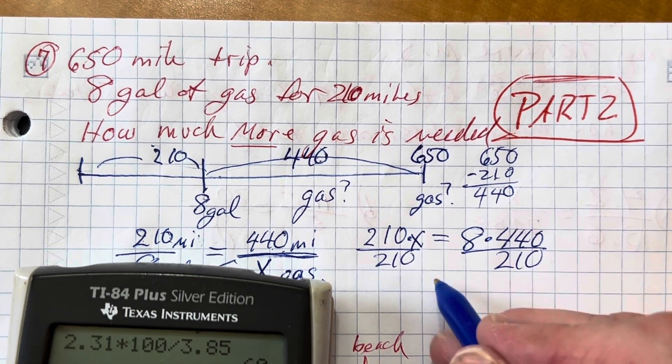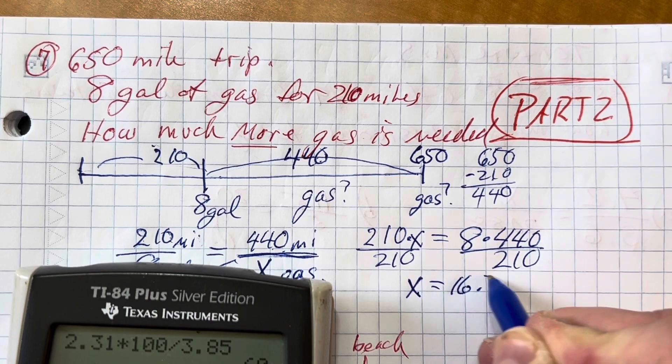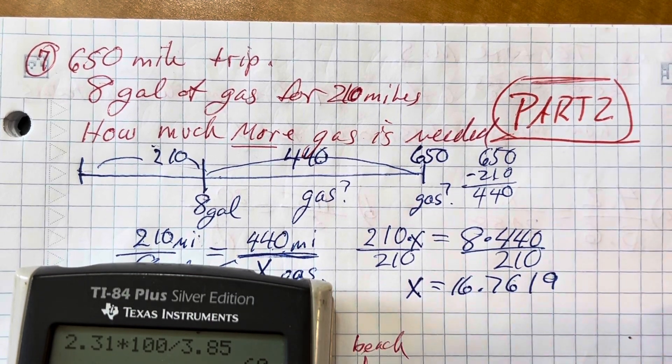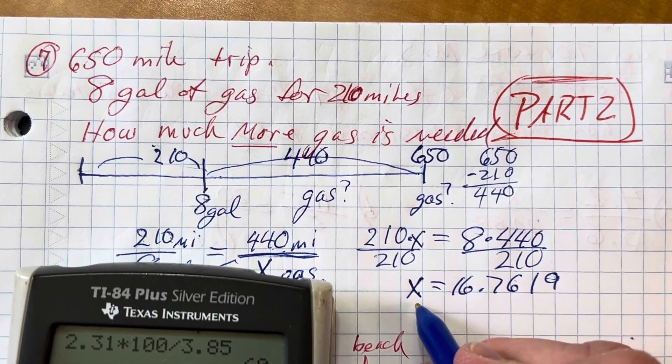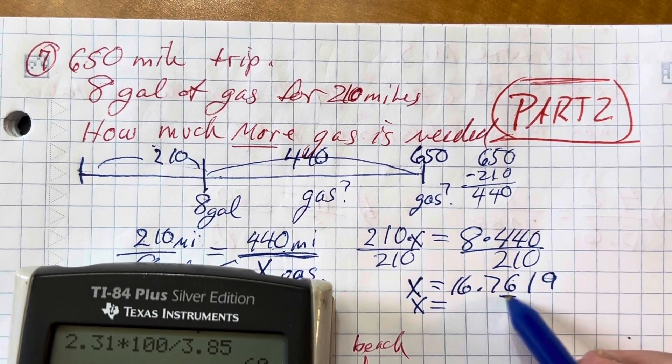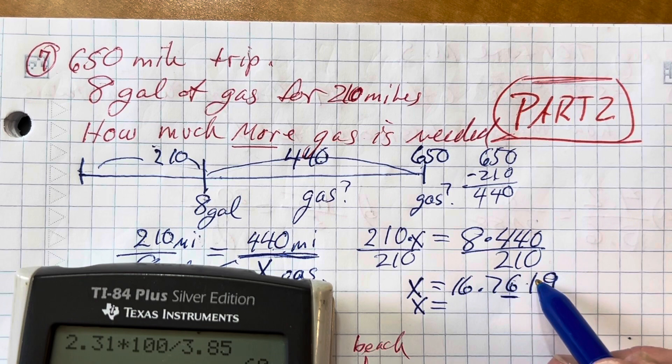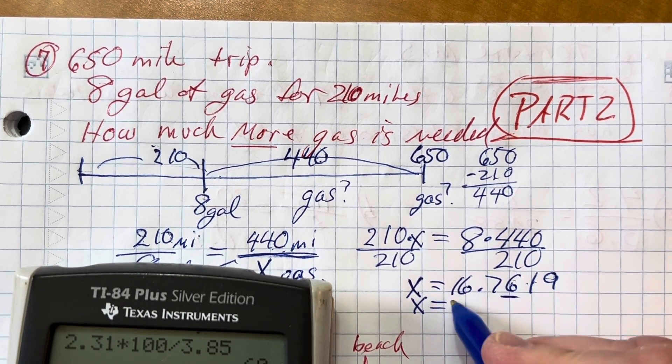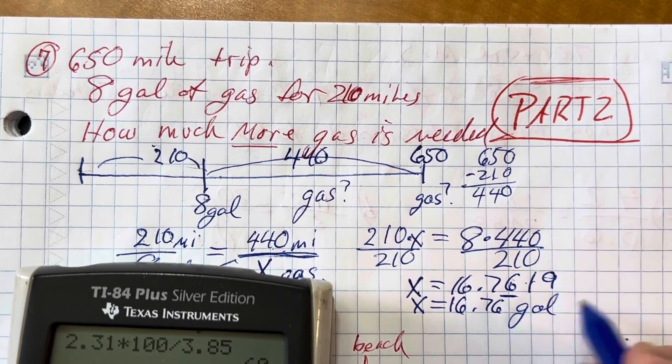Let's see. 8 times 440 divided by 210. That is 16.7619 gallons of gas. We're just going to round. Usually, if you want to round, just round to the nearest hundredths place. That would be that place right there. In this case, this number stays the same because the 1 right after it is less than 5. So we will have 16.76 gallons of gas.